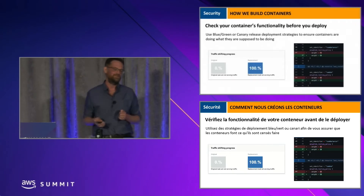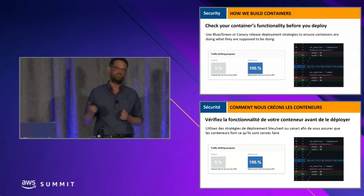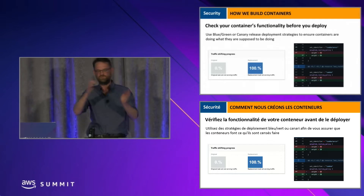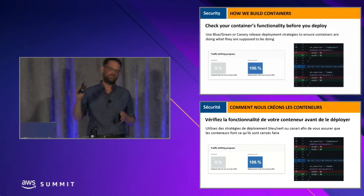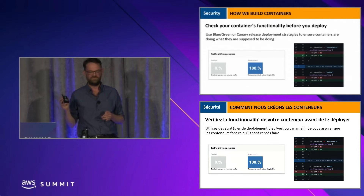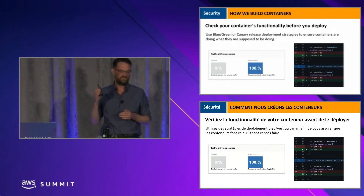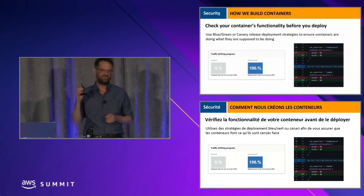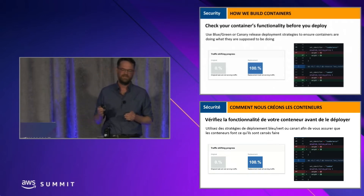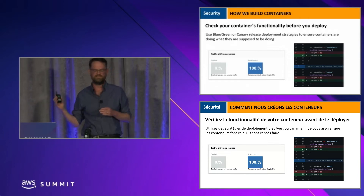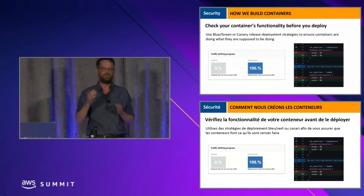Check your container's functionality before you deploy. You can use blue-green or canary release deployment strategies to ensure containers are doing what they're supposed to. In a blue-green deploy, traffic is slowly shifted automatically from the original version to the new version — if an error is detected, it automatically reverts. In a canary release, you manually adjust routing: for example, initially a 75-25 split, changing to 50-50. In blue-green you have two identical environments and the change happens quickly, while in canary you slowly roll out changes to a subset of users.